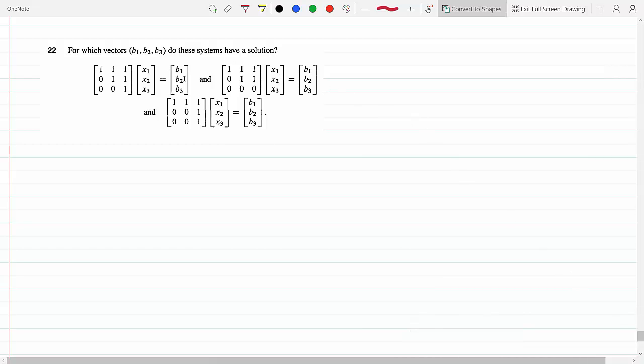For which vectors b1, b2, b3 do these systems have a solution? This is similar to the one we did before. If we look at the first system, we can see that not one column is a multiple of the other column—they're all different.